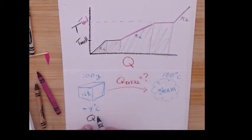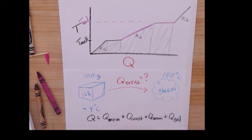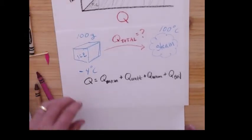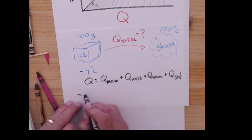So I'm going to warm it up, plus melt, plus warm up the water, plus boil the water. And each one of those is going to have a slightly different piece. So the warming up is going to be MC delta T of the ice.